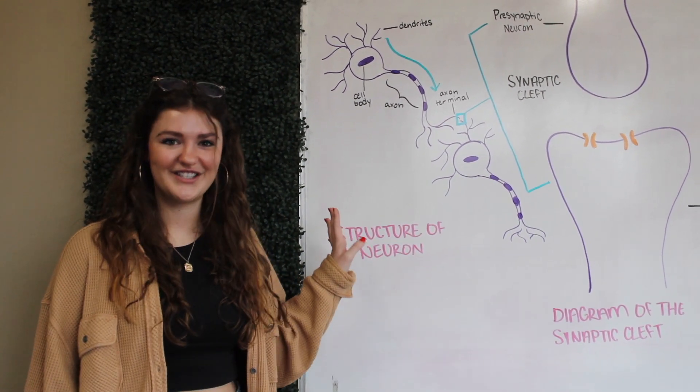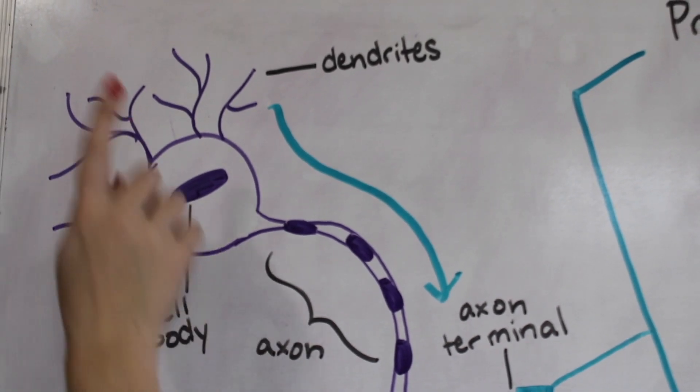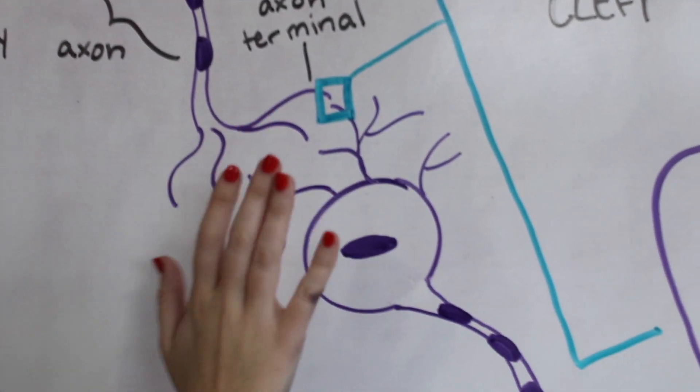This diagram represents the structure of a neuron. The direction of the chemical signal that's passed between neurons runs from the dendrites down the axon to the axon terminal and almost touches the dendrites of the next neuron.